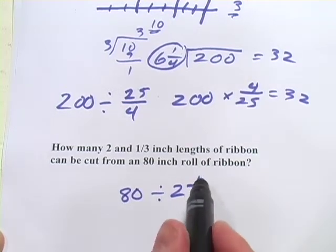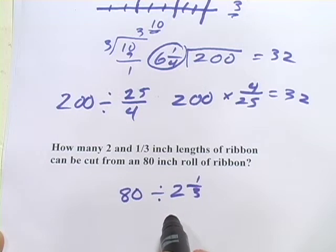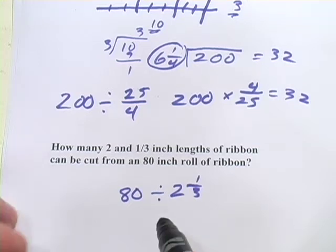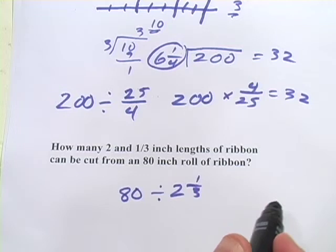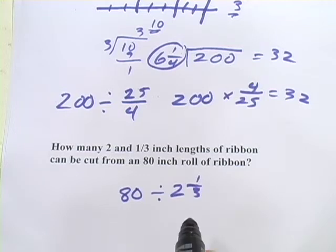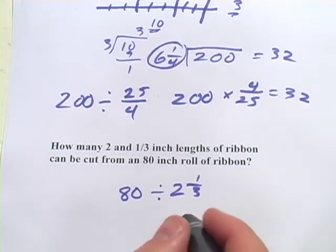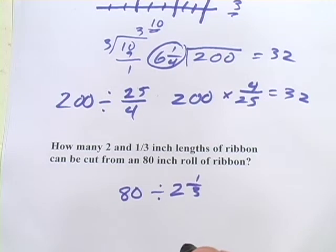Now in this case, one third is not irrational, but it's repeating, it never ends. It would be 2.3333333. And if you punch that in your calculator, 80 divided by 2.3333333, you'll get a close enough answer. I think I'm going to do this one with multiplying by the reciprocal of the fraction.